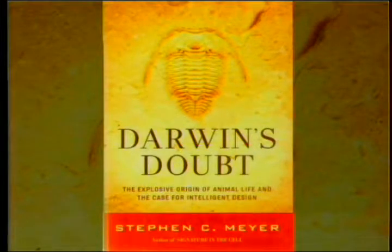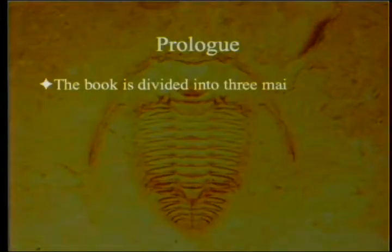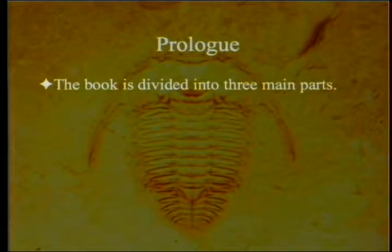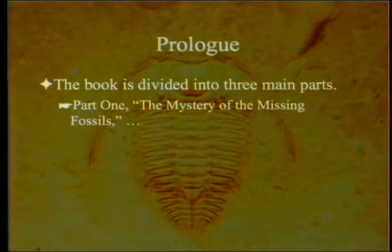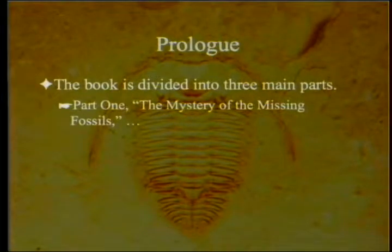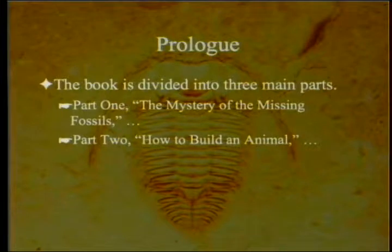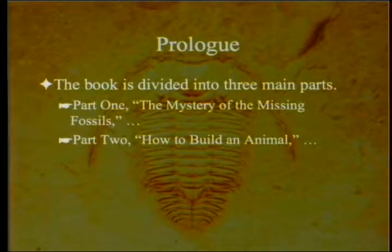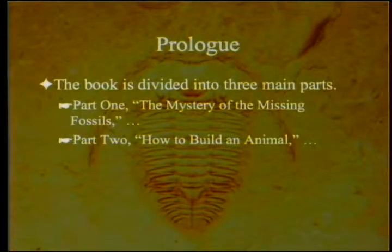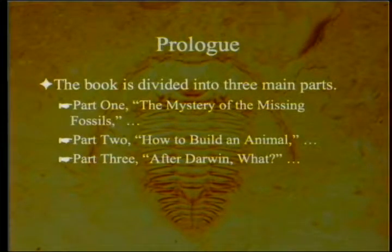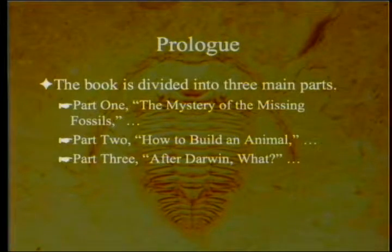The book is divided into three main parts. Part one: the mystery of the missing fossils, which we'll be finishing today. Part two: how to build an animal, discussing what you need to get an animal and whether Darwinism can get you there. And finally part three: well, if Darwin isn't the answer, then where do you go?